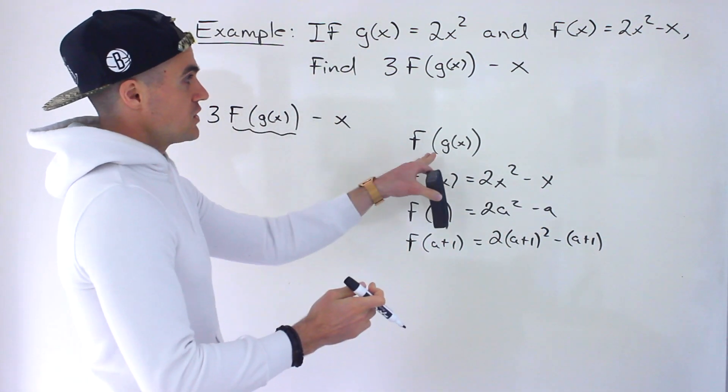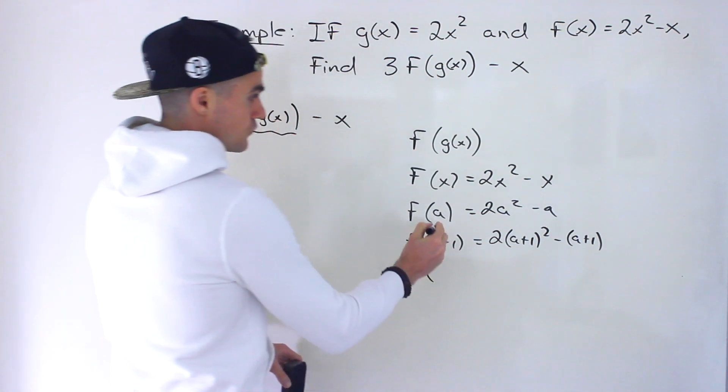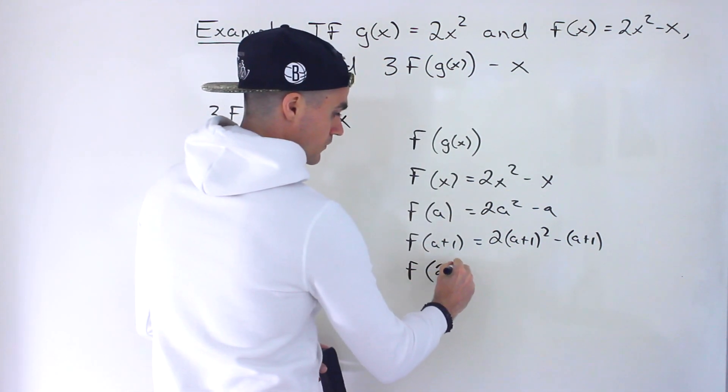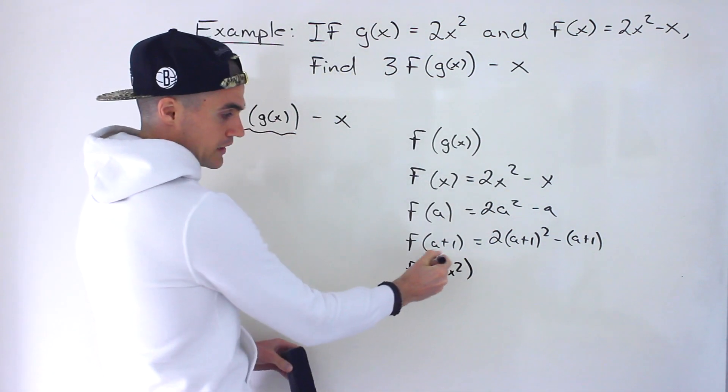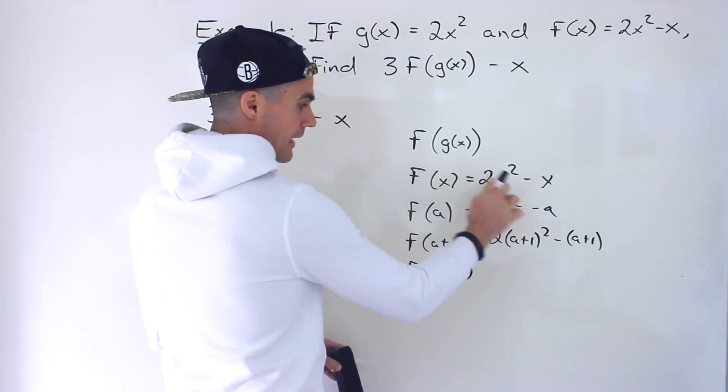So what's f of g of x going to be? Well, we would plug in the expression for g of x in the bracket, which is 2x squared. And so we would plug in 2x squared for all the x's in f of x.